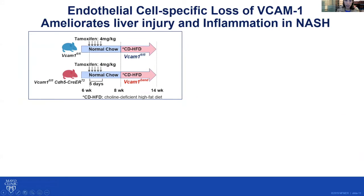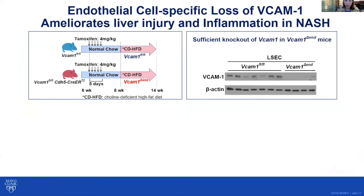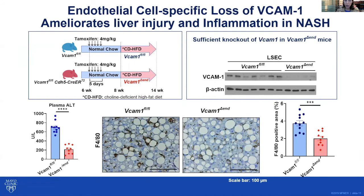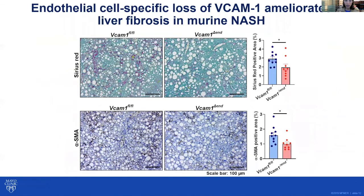Since VCAM1 is expressed in endothelial cells as well as other cell types including immune cells, we generated a mouse model with conditional deletion of VCAM1 in endothelial cells. Mice were fed a NASH-inducing diet. As shown in the Western blot, we first confirmed endothelial cell-specific VCAM1 knockdown. Plasma ALT was remarkably decreased in mice with conditional VCAM1 deletion in endothelial cells, as well as macrophage infiltration as assessed by F4/80 immunohistochemistry. Moreover, endothelial cell-specific loss of VCAM1 ameliorated liver fibrosis, as shown by Sirius red staining and smooth muscle alpha immunohistochemistry.